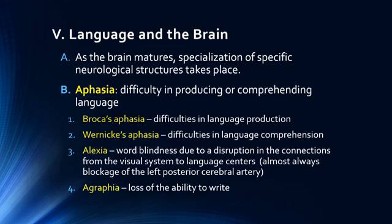This indicates that each component of language has its own neurological structure. There are other types of language disruptions: alexia is what we call word blindness, due to disruptions in connections from the visual system to the language centers, almost always a blockage of the left posterior cerebral artery. People with alexia can understand spoken language perfectly fine but cannot read words. Agraphia is a sudden loss of the ability to write words. Interestingly, these can be dissociated — there are patients who have alexia but not agraphia, so in a very bizarre presentation they can write but cannot read what they have just written. It is remarkable that you can get that kind of dissociation.